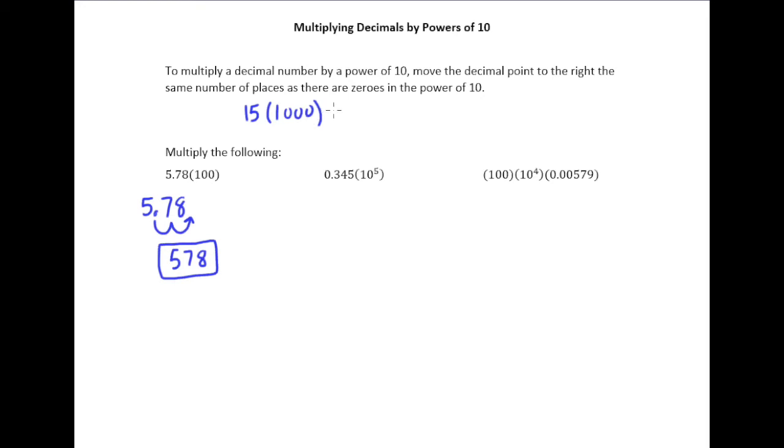Remember our strategy here was to pretend like the zeros aren't even there. Just take 15 times 1, which is 15, and then add three zeros. We discussed why that trick works.